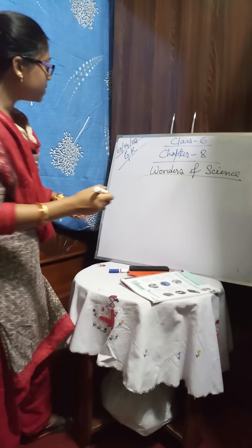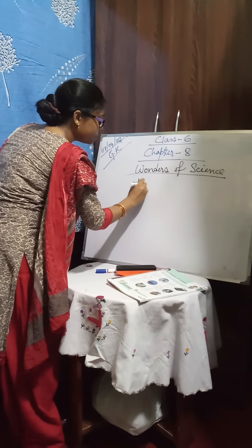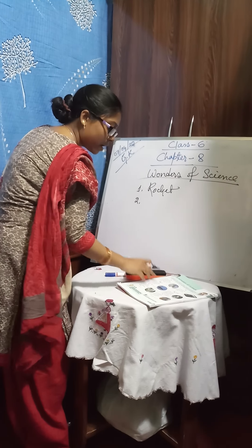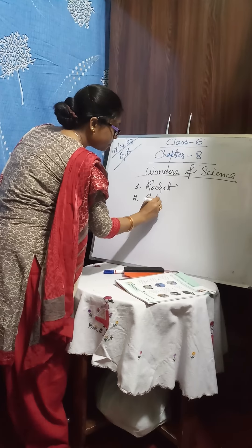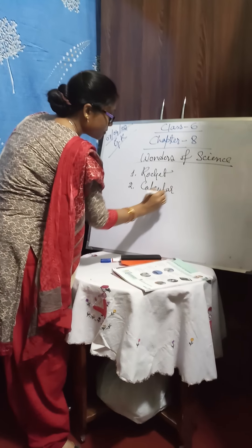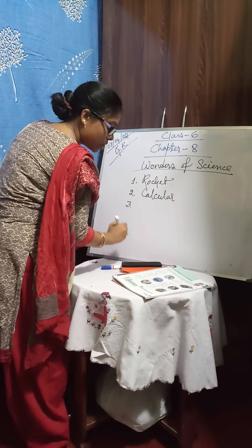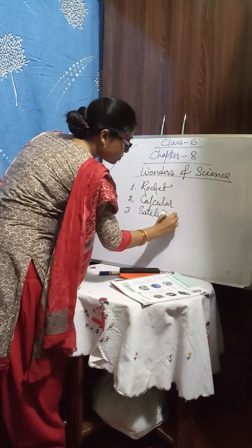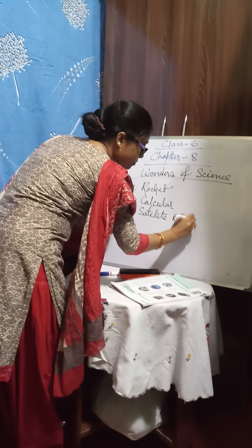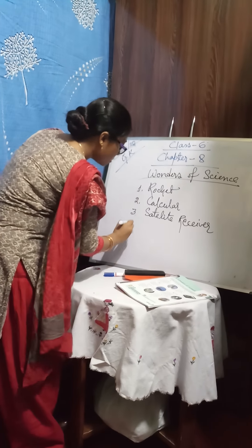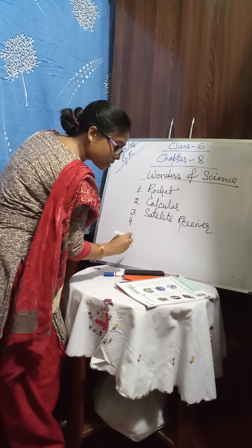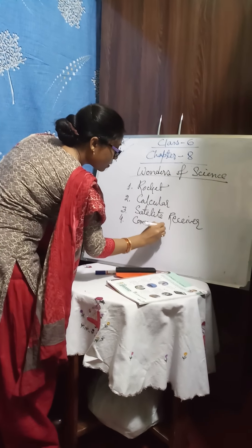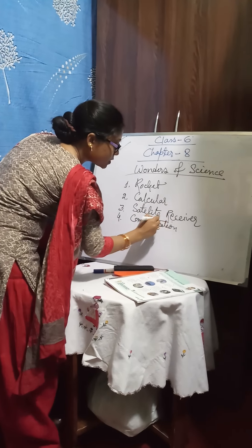So to recap: number one we discussed rocket, number two calculator, number three satellite receiver, and number four communication satellite.